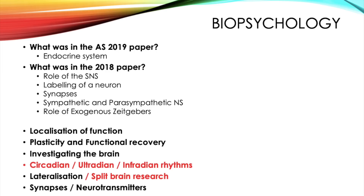Next you've got your circadian, ultradian, and infradian rhythms. I think of everything on this list this is probably the most likely to come up. Your circadian rhythm is your sleep-wake cycle, the ultradian rhythm covers the stages of sleep, and your infradian rhythm is for example your menstrual cycle or seasonal affective disorder.